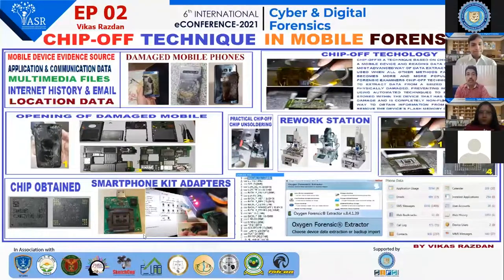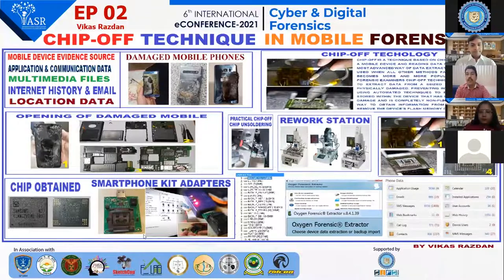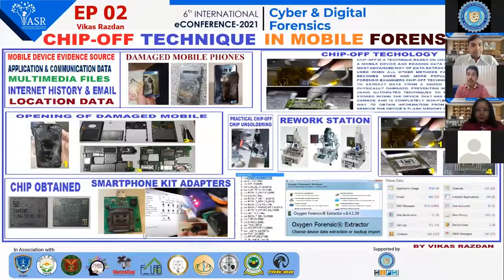Mobile devices as an evidence source carry application and communication data, multimedia files, internet history, email, and location data. If at the time of visiting a crime scene we find a mobile phone, the data obtained from it can add to the investigation and help investigating agencies crack the crime. These small smart devices amass huge quantities of data which can be extracted to facilitate the investigation process.